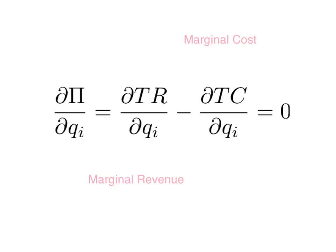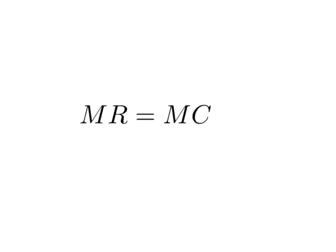So our profit maximizing equation is simply to set quantity so that marginal revenue minus marginal cost equals zero — or, as we usually say it, set quantity so that marginal revenue equals marginal cost.